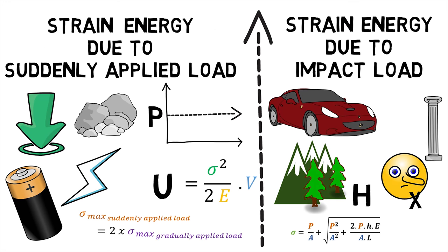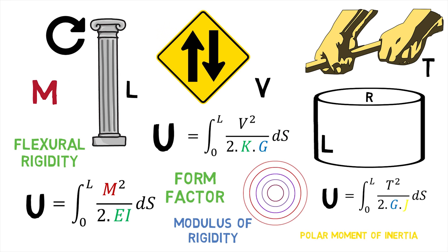Hence, we first saw how strain energy is stored due to suddenly applied load and impact load energy, and then went down to see how strain energy is stored due to bending, shear, and torsion.